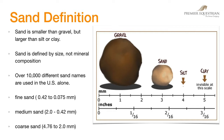So you can see here, we have gravel, sand, and then very fine silt. At this point, the clay particle is not even visible on this scale. Again, remember, there are over 10,000 different sand names used in the US alone.